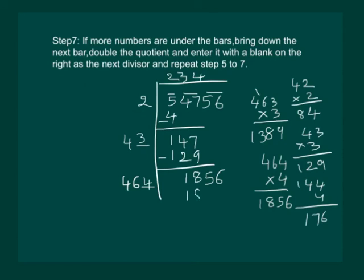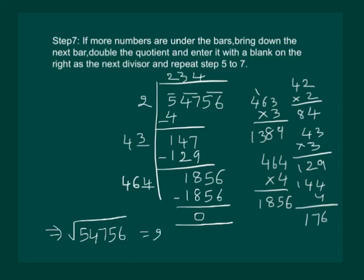So let us put 4 and divide. We get 1856, and on subtracting we get remainder 0. That implies that the square root of 54756 is equal to 234.